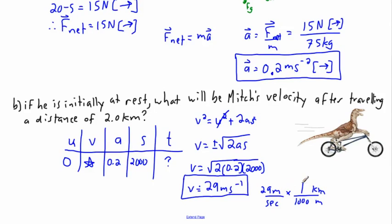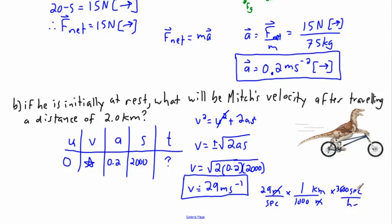If I do 29 times 1 divided by 1,000, the meters cancel top and bottom, giving kilometers per second. But I want kilometers per hour. So I need to get rid of the seconds by putting seconds on top and hours on the bottom. There are 60 seconds in a minute and 60 minutes in one hour, so 60 times 60 is 3,600 — meaning 3,600 seconds in one hour. The seconds then cancel out.